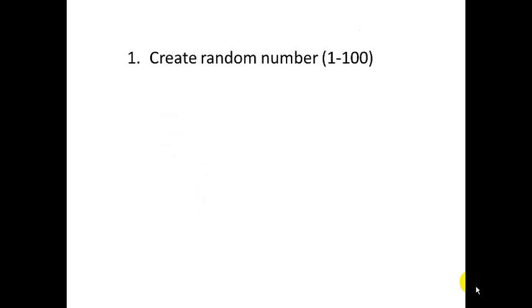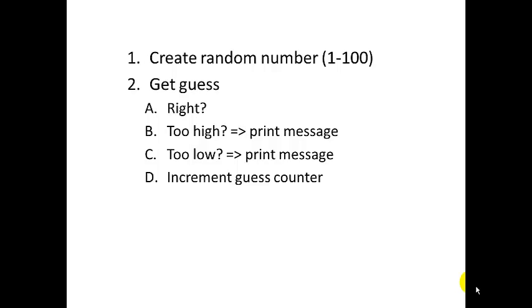Let's think through how we want to write the program. First we're going to start by creating a random number between one and a hundred. So we're probably going to use a random number generator for that and assign that to a variable. Then we're going to have to get a guess. Then we've got to look at that guess and decide is the guess right?